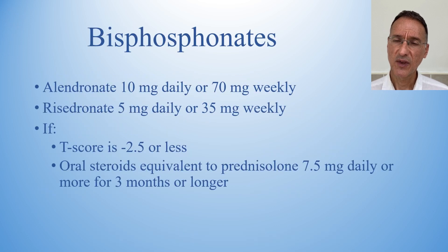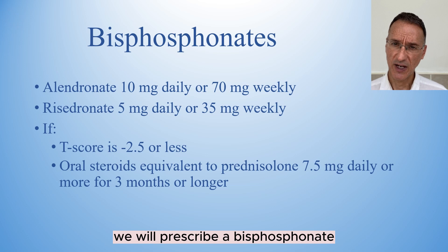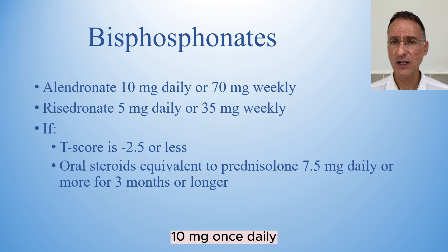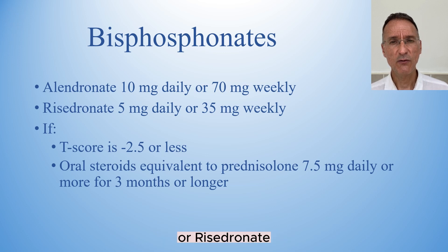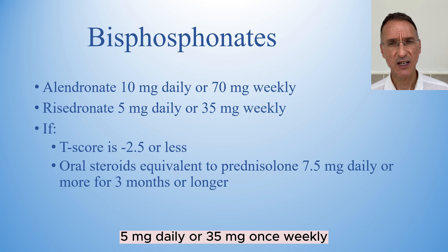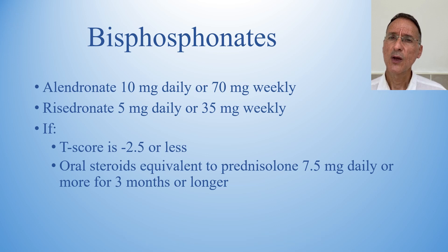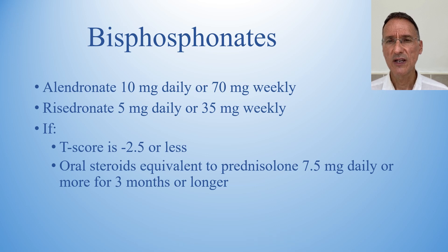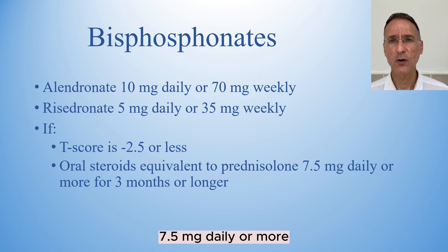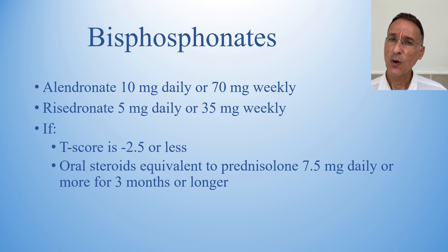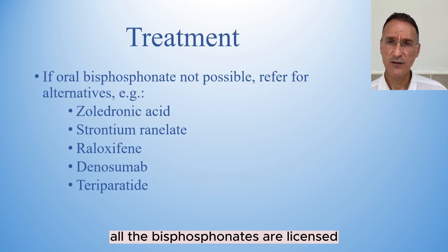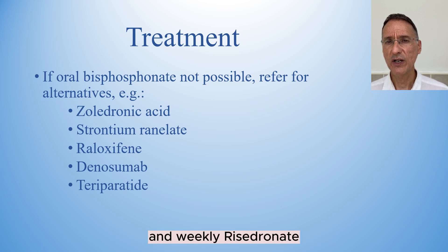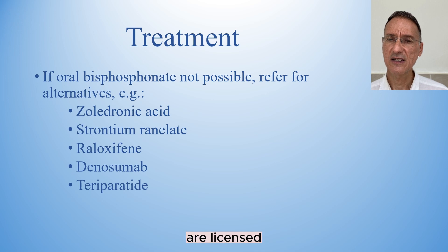Where drug treatments are recommended, we will prescribe a bisphosphonate first line in primary care: alendronic acid 10 mg once daily or 70 mg once weekly, or risedronate 5 mg daily or 35 mg once weekly. We will consider bisphosphonates if taking oral steroids equivalent to prednisolone 7.5 mg daily or more for 3 months or longer. All bisphosphonates are licensed for use in postmenopausal women; however, only daily alendronate and weekly risedronate are licensed for use in men.